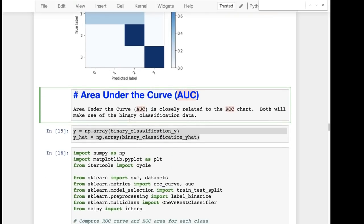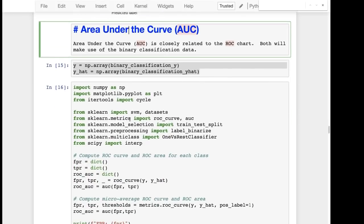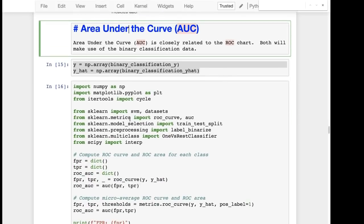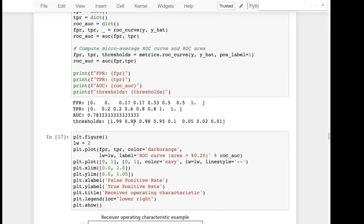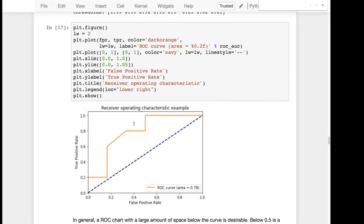Okay, area under the curve. Area under the curve is closely related to the ROC chart. The code here is given to generate this for the binary classification. Here I mean essentially what this is measuring is as you adjust the threshold what does it do to your true positive rate and your false positive rate. In a nutshell you're trying to maximize this area under the curve.